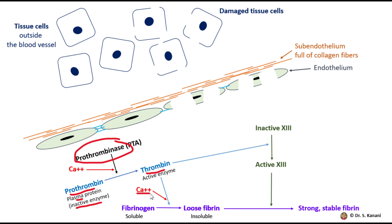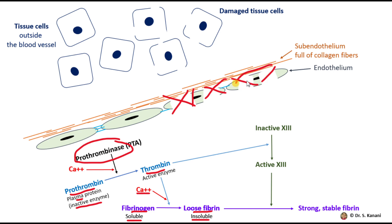Thrombin, in the presence of calcium ion, changes fibrinogen — which is one of our plasma proteins — into fibrin. Fibrinogen is soluble, but fibrin is insoluble, and those are the fibrin molecules that form the network of a blood clot. The fibrin molecules start laying down at the spot where the wall of the blood vessel is damaged and form a network, which is the foundation of the blood clot.